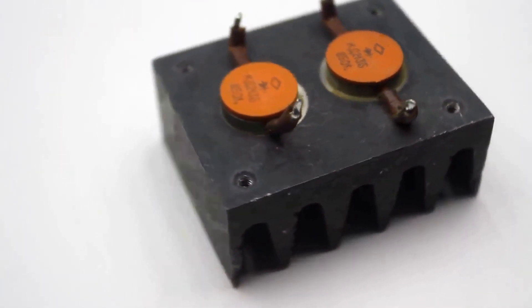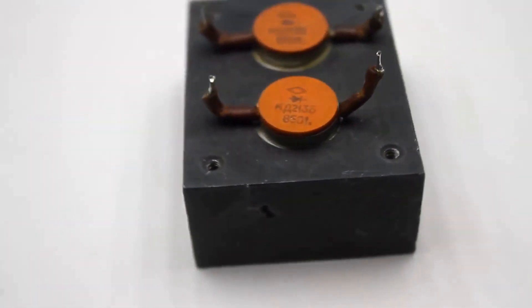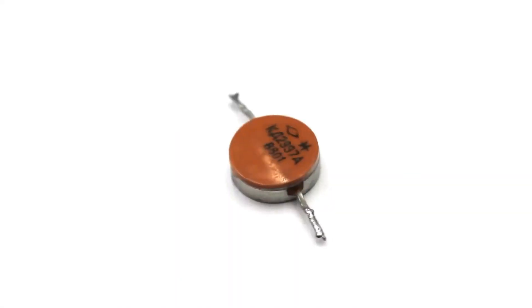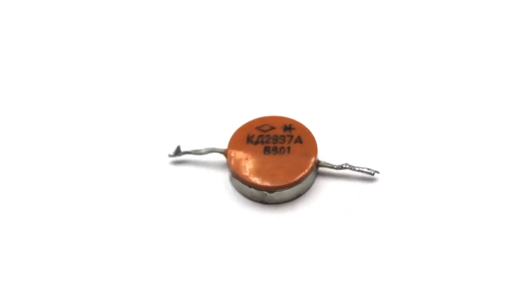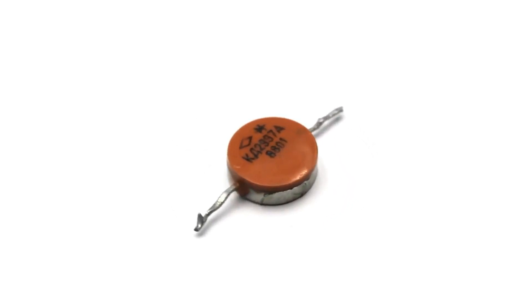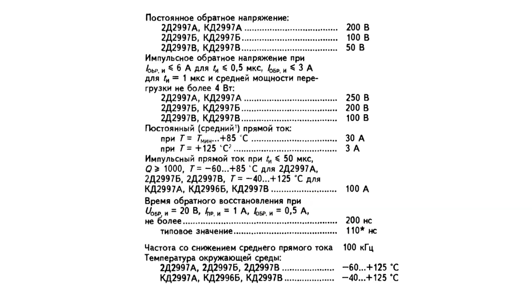10 amps is good of course, but 30 is better. Diode D2997, the most powerful of its kind. Besides being 30 amp, it is also fast-acting. The reverse recovery time is only 100 to 200 nanoseconds.